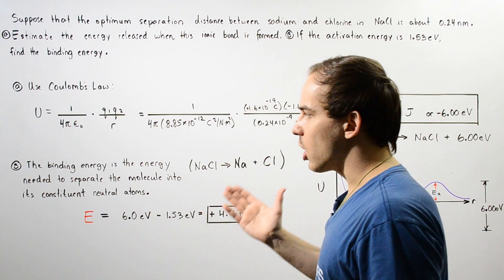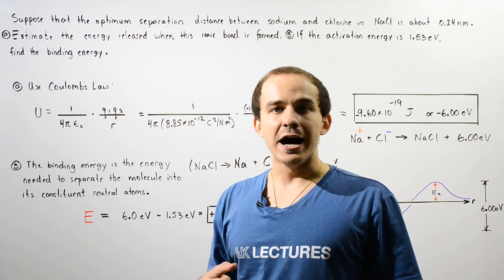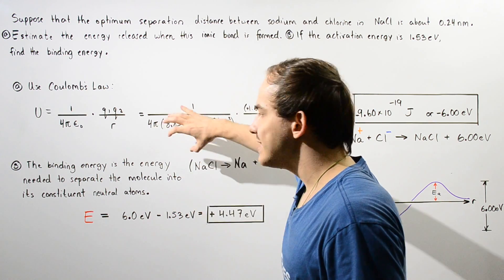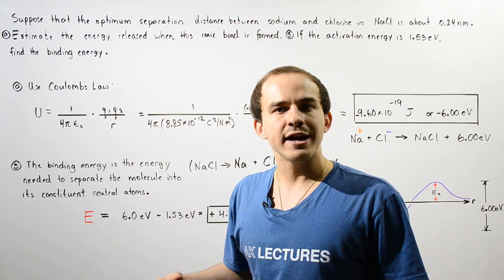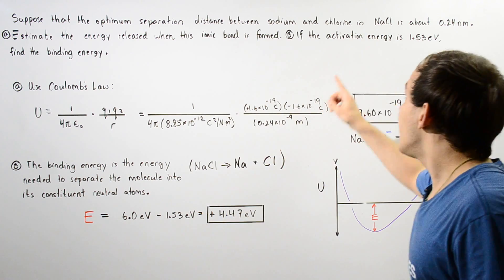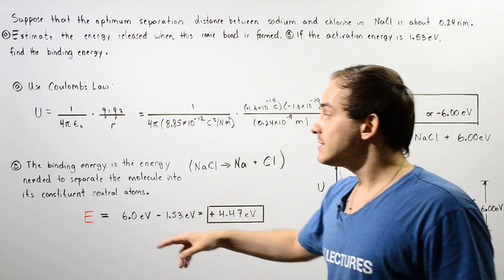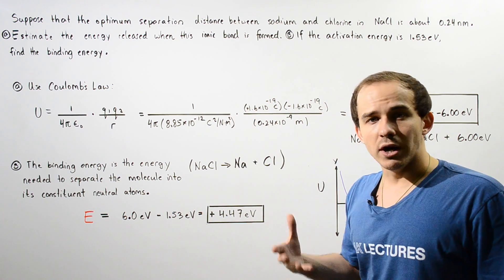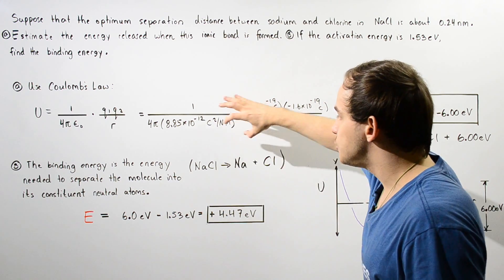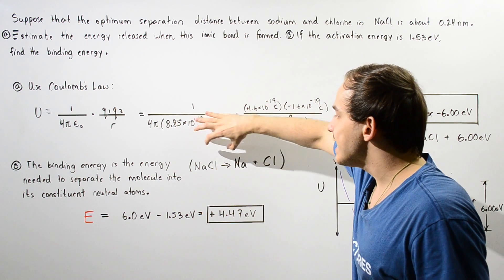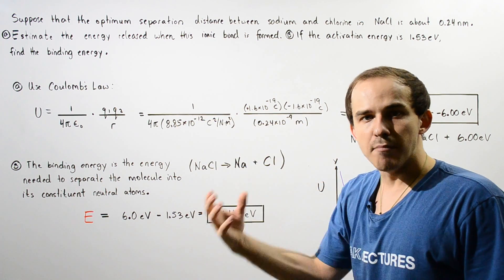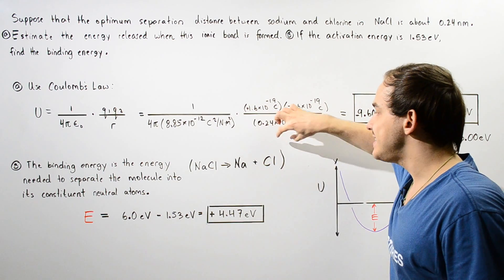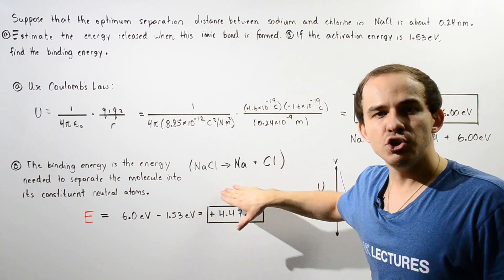Now let's move on to part B. We want to find the binding energy. Recall that the binding energy is the energy that is required to separate our ionic molecule into its constituent neutral atoms. We basically want to find the amount of energy needed to take our sodium chloride molecule and separate it into Na and Cl in their neutral state.